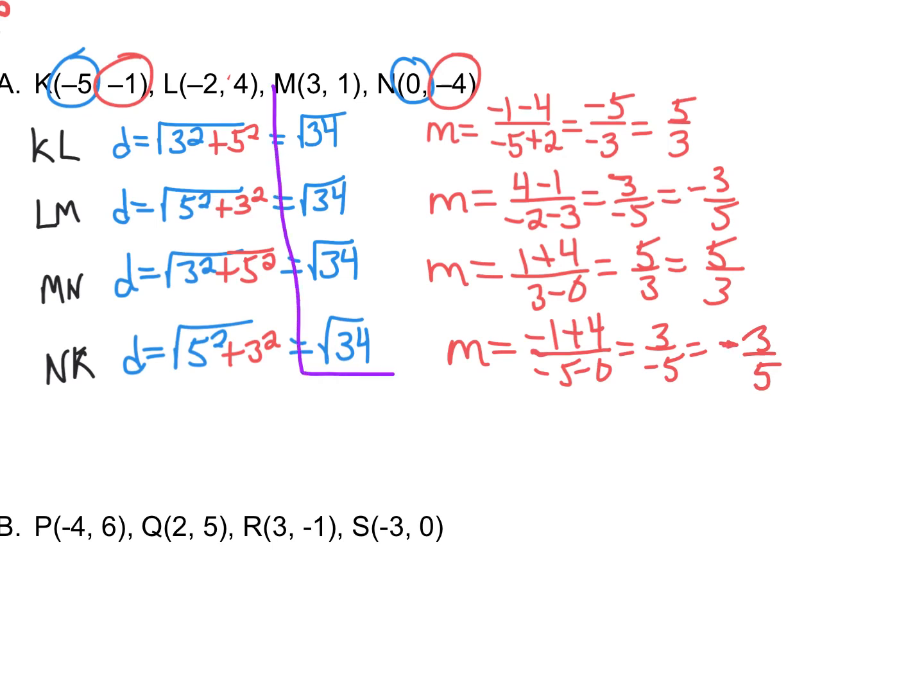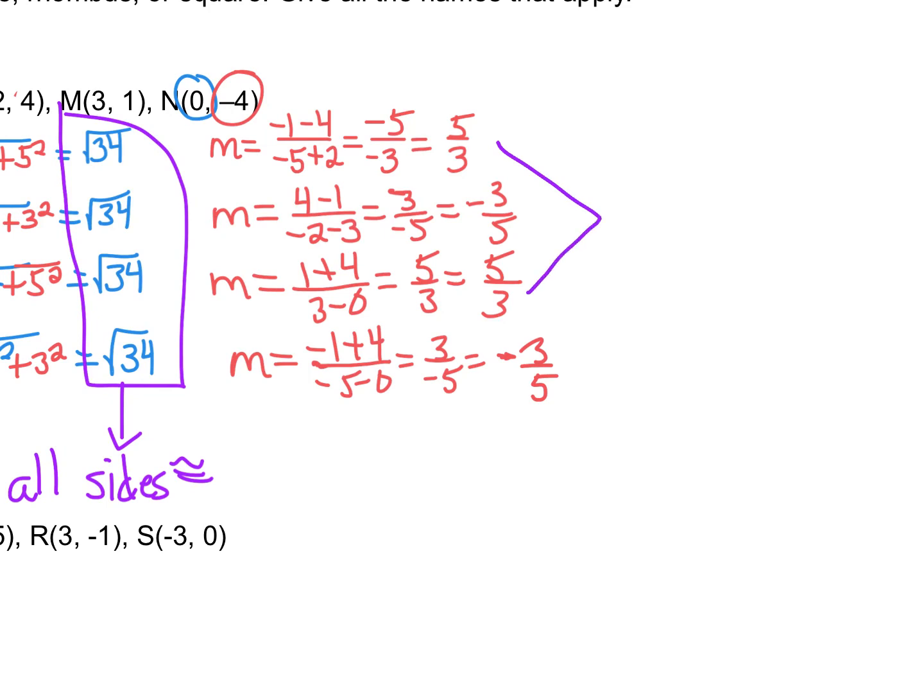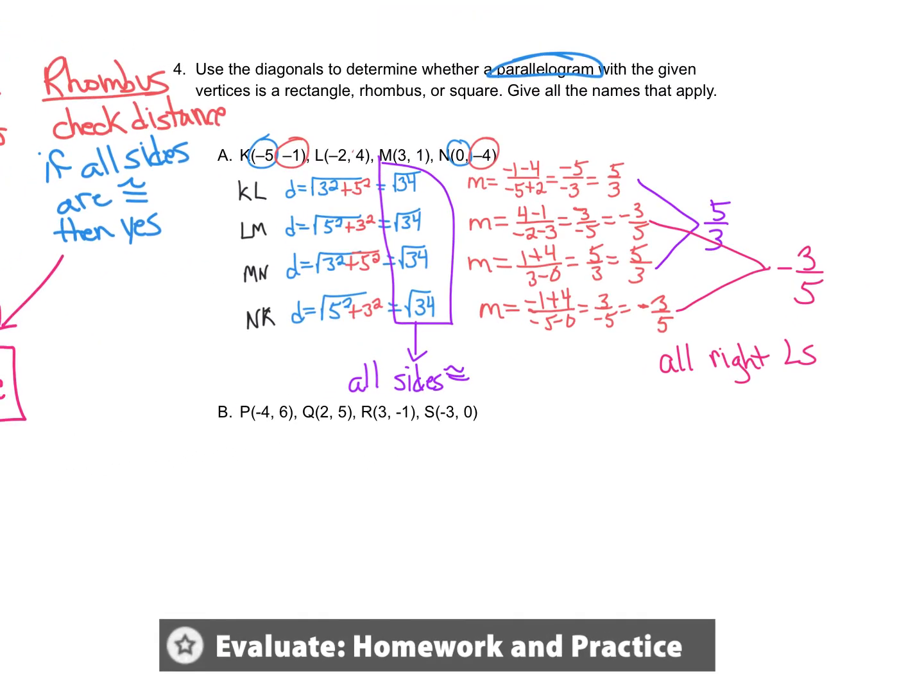So let's look first. All these are the same, so all sides are congruent. Then over here, these two are parallel, right? Because they both are 5 thirds. And then these two are parallel. And those are opposite reciprocal slopes, so perpendicular lines, right angles. So this problem is a square. It's give all the names that apply, so it is a rectangle, it is a rhombus, and it is a square.